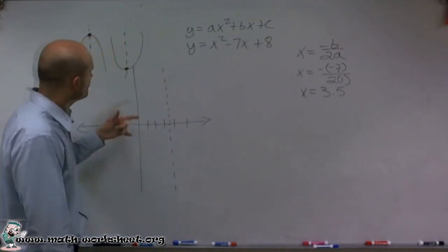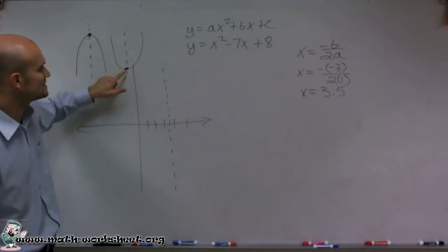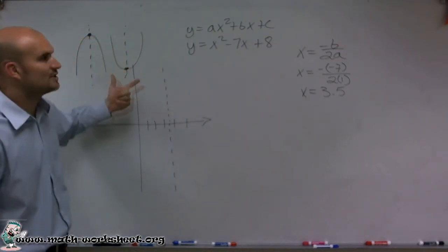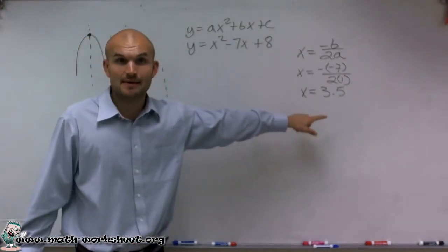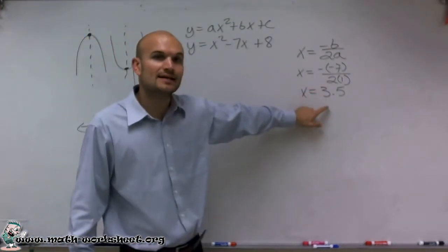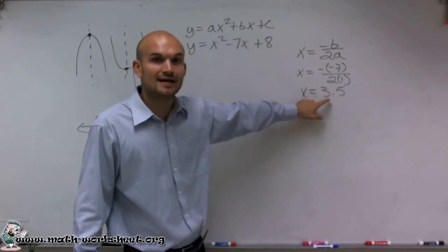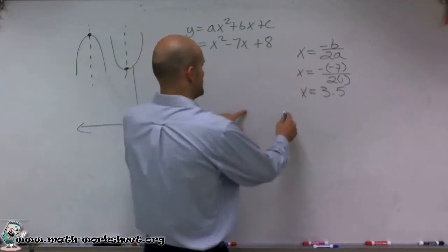To do that, the x value of your vertex is your line of symmetry. To find the y value, you're going to have to plug in, just like you did table of values, but plug in your x value of your line of symmetry into your function.